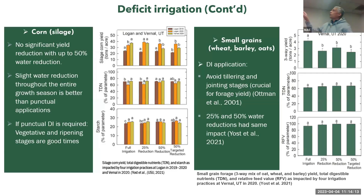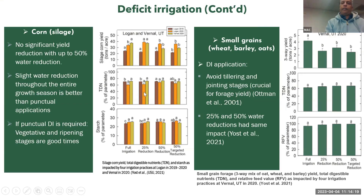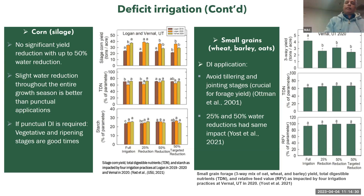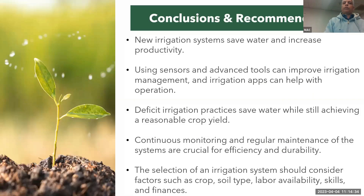For corn, deficit irrigation at 50% water reduction did not result in a major yield difference, but the deficit must be applied as small amounts across the entire season. In conclusion, new irrigation systems can help save water while maintaining or increasing productivity. Using sensors and advanced tools improves irrigation management, and deficit irrigation can save water while achieving reasonable yields.